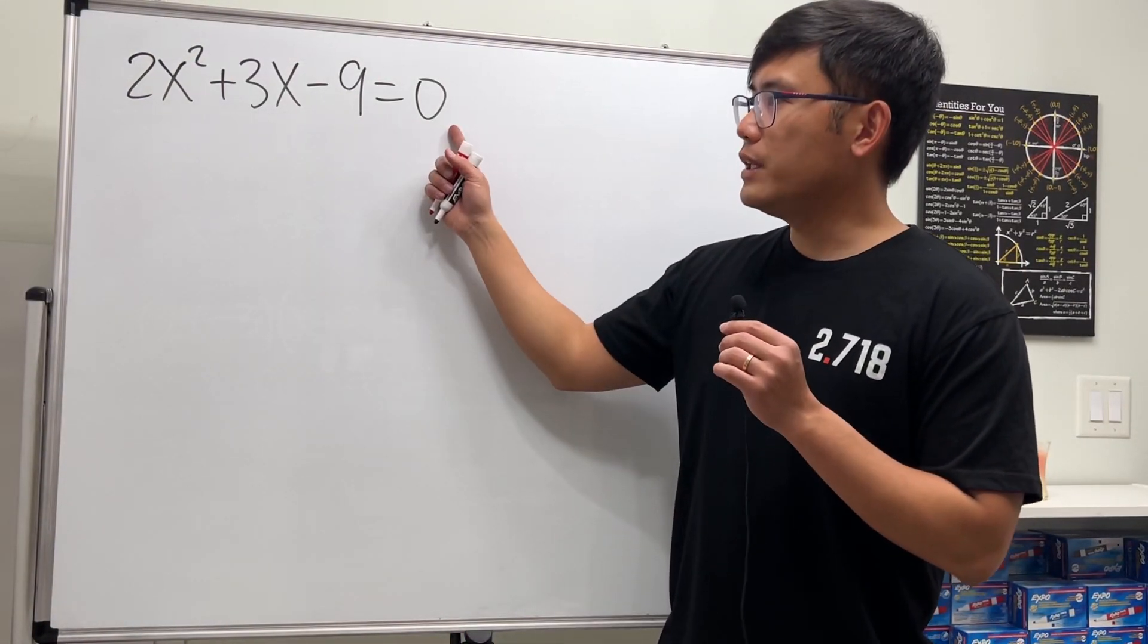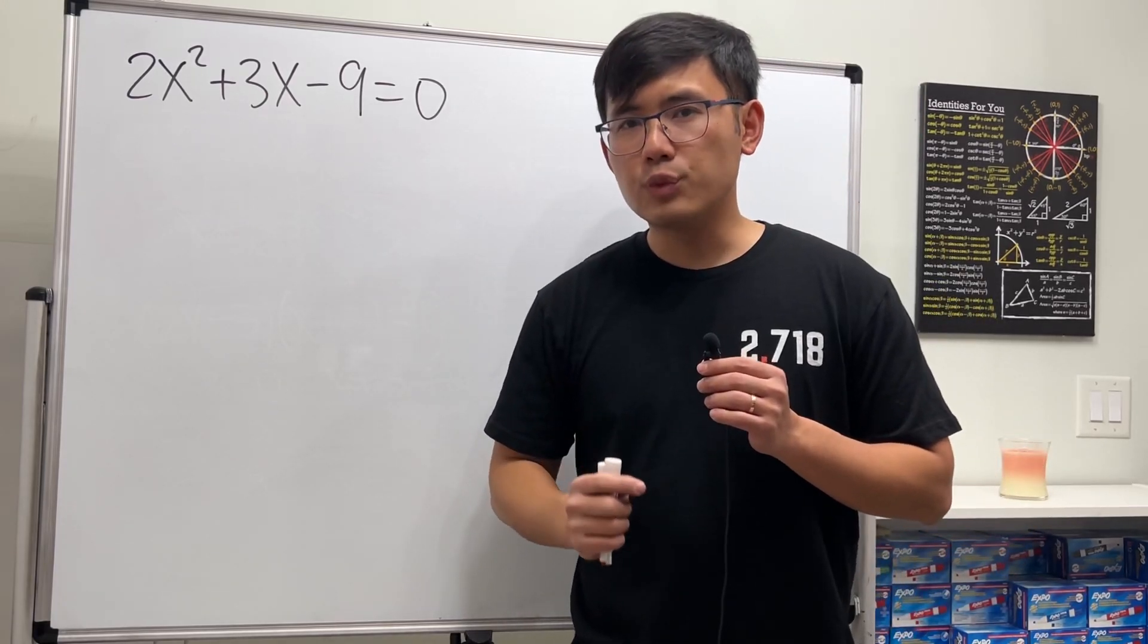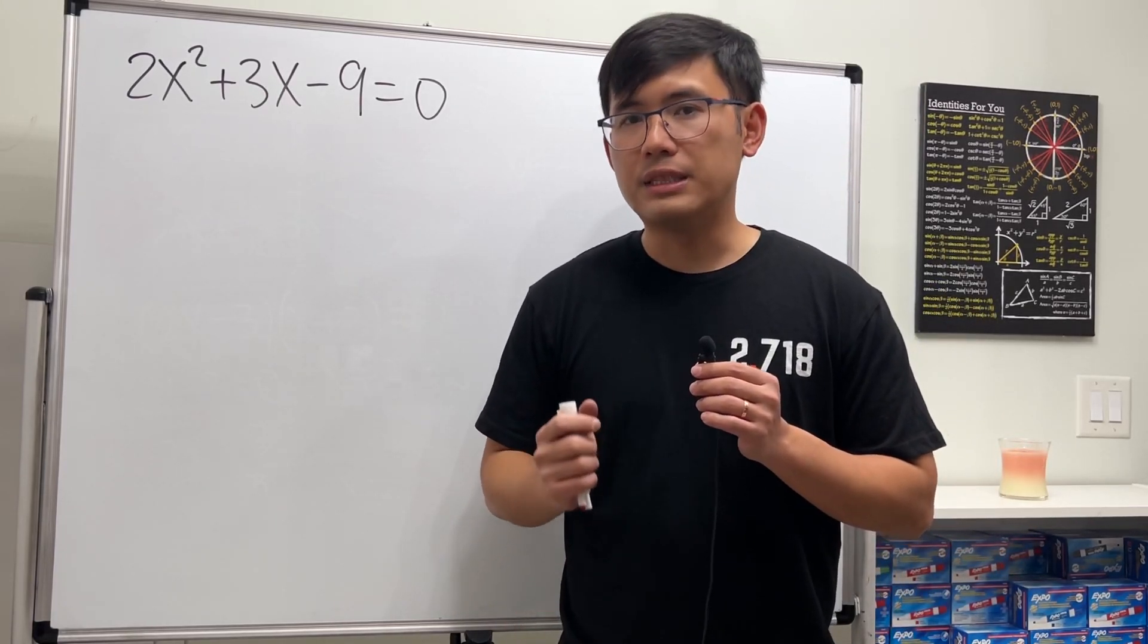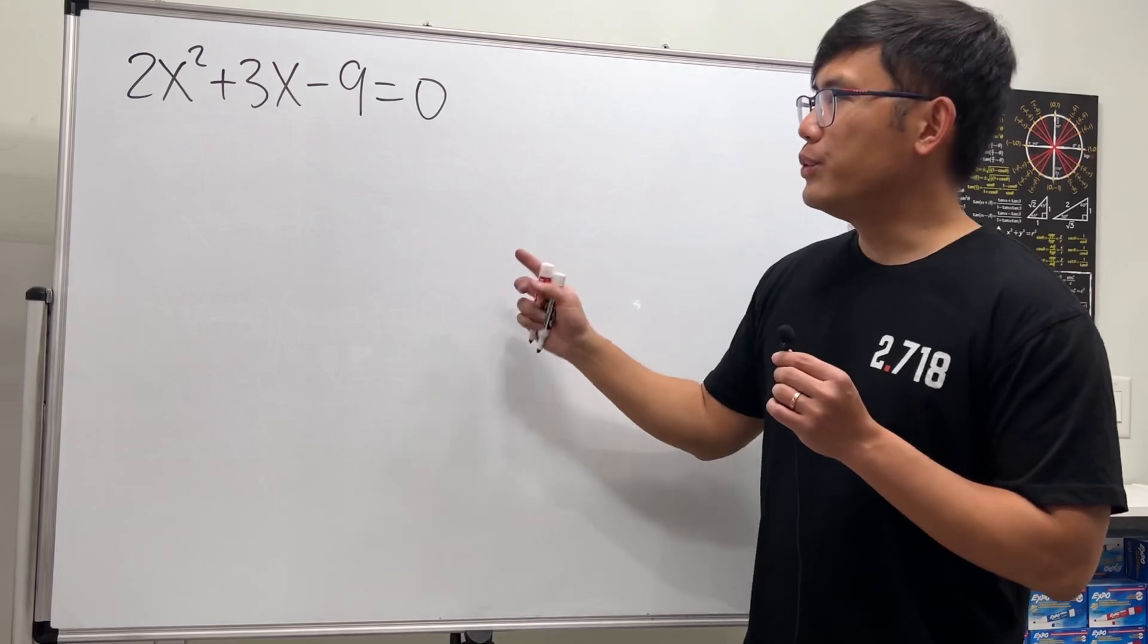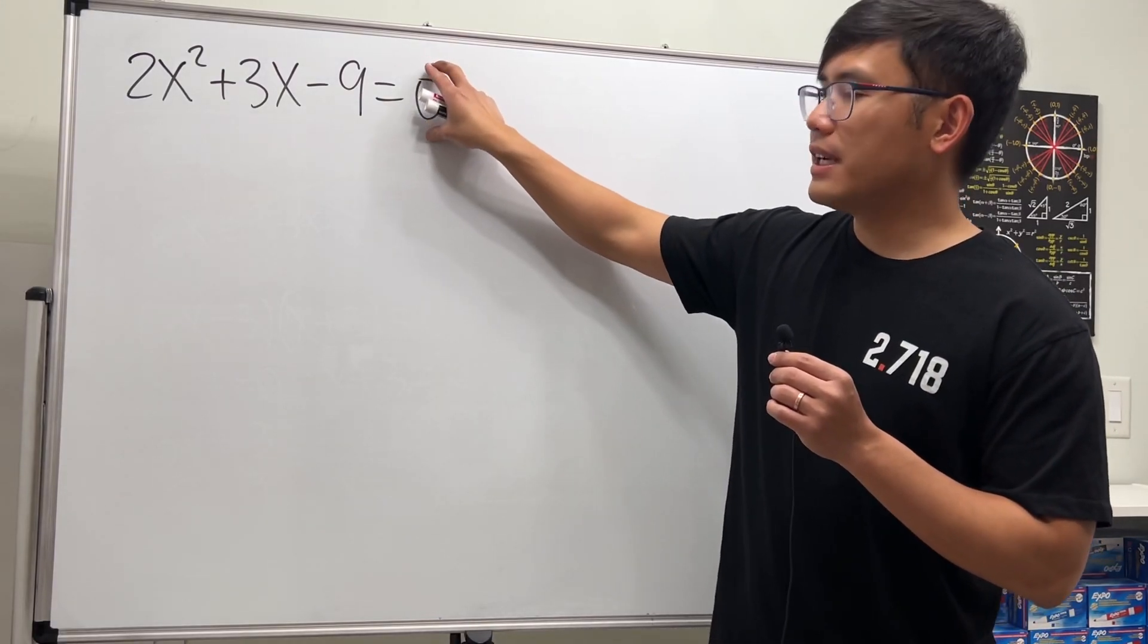Here we're going to see how to solve this quadratic equation. Remember, the easiest way to solve a quadratic equation is by factoring. To do so, we have to make sure that one side is equal to zero.